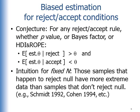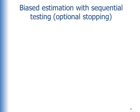This has been shown many times. Schmidt mentioned it in 1992 and Cohen recapitulated it in 1994. Moreover, this is true not just for fixed n. It's also true for a very common way that people actually sample data, and that is sequential testing.